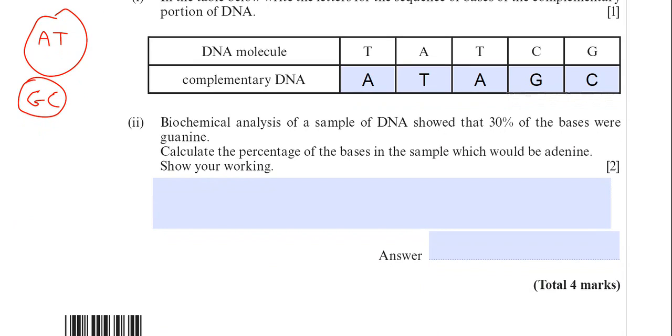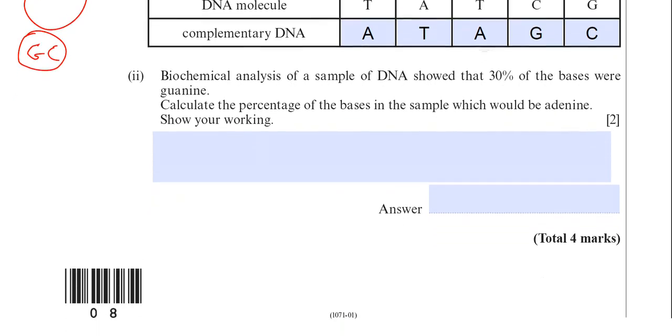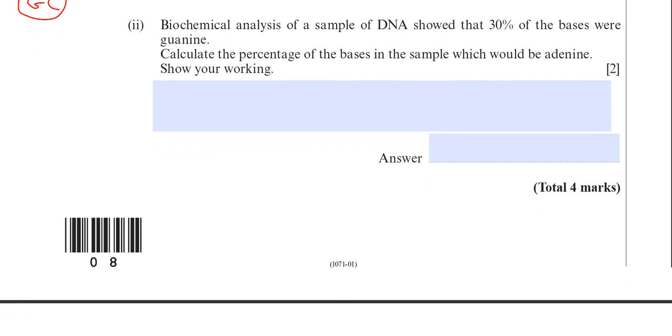Right, biochemical analysis of a sample of DNA showed that 30% of the bases were guanine. Calculate the percentage of bases in the sample which would be adenine. Show your workings. This is a question that is based on someone called Chargaff and his experiments where he determined the percentage of bases in DNA from a variety of organisms. So I'd like to just take you through this simple calculation to get the answer for you.